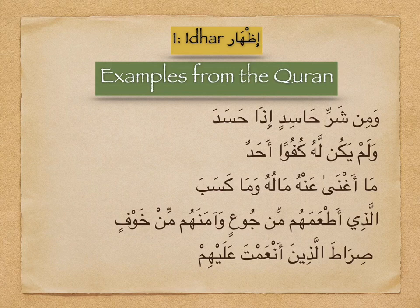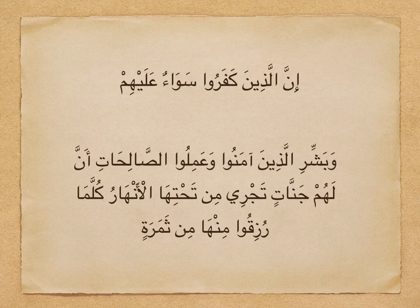In 'Alladhi at'amahum min juu' — and 'Wa aamanahum min khawf' — we have the letter Noon in 'Min', then the letter Kha, which is from the letters of Al-Izhaar. In 'Siraatal ladheena an'amta alayhim' — the Noon in 'An'amta' is followed by the letter Ayn, which is Izhaar, so we do nothing — just read it as-is, without any stress, Ghunna, or delay. Similarly in 'Innal ladheena kafaruu sawaa'un alayhim' — we have Noon followed by the letter Ayn, so it is Izhaar.